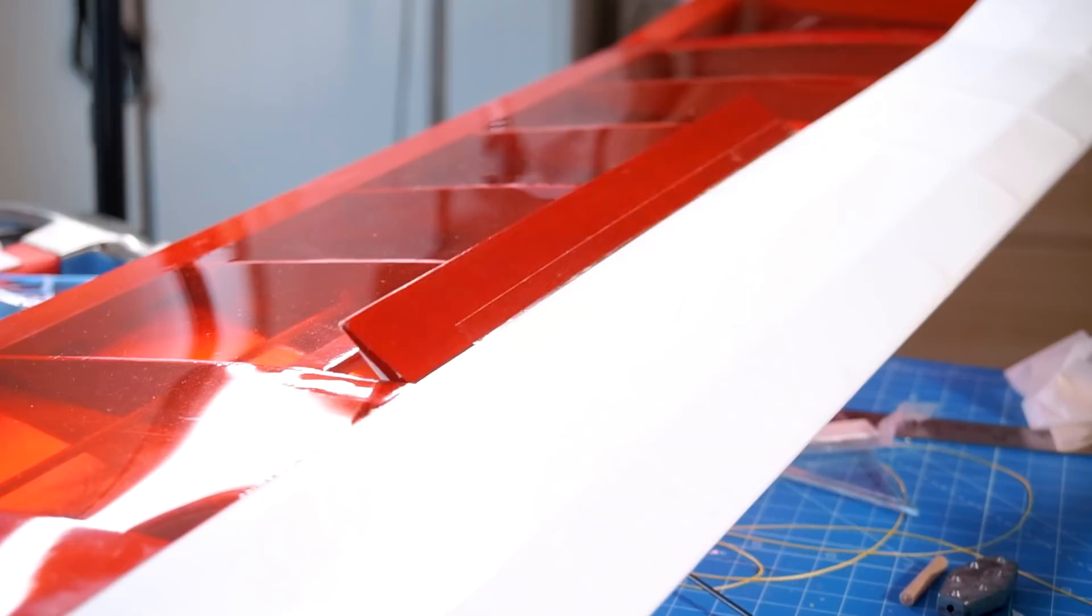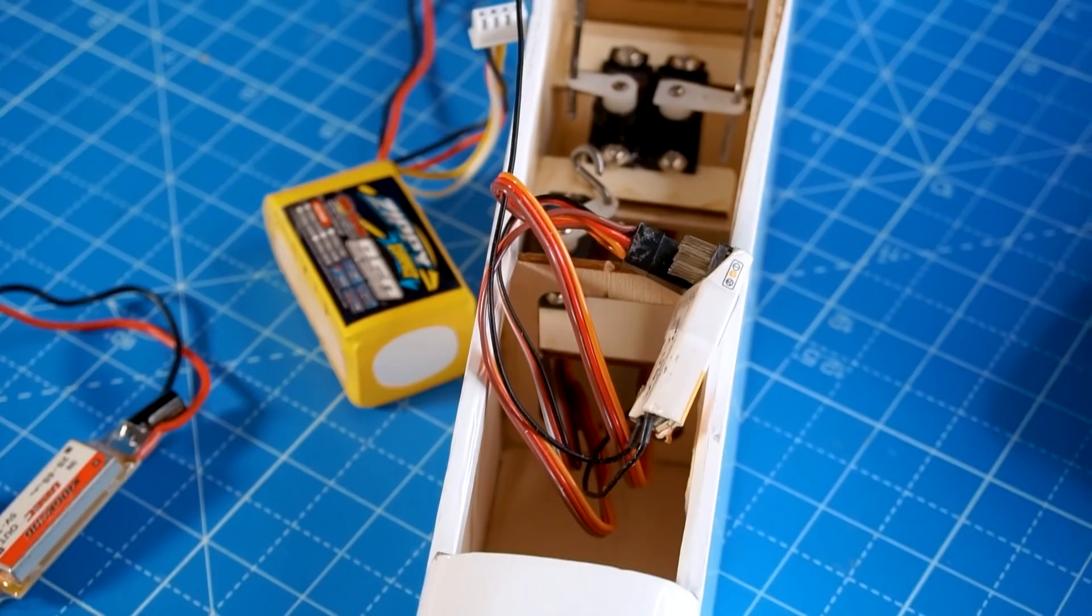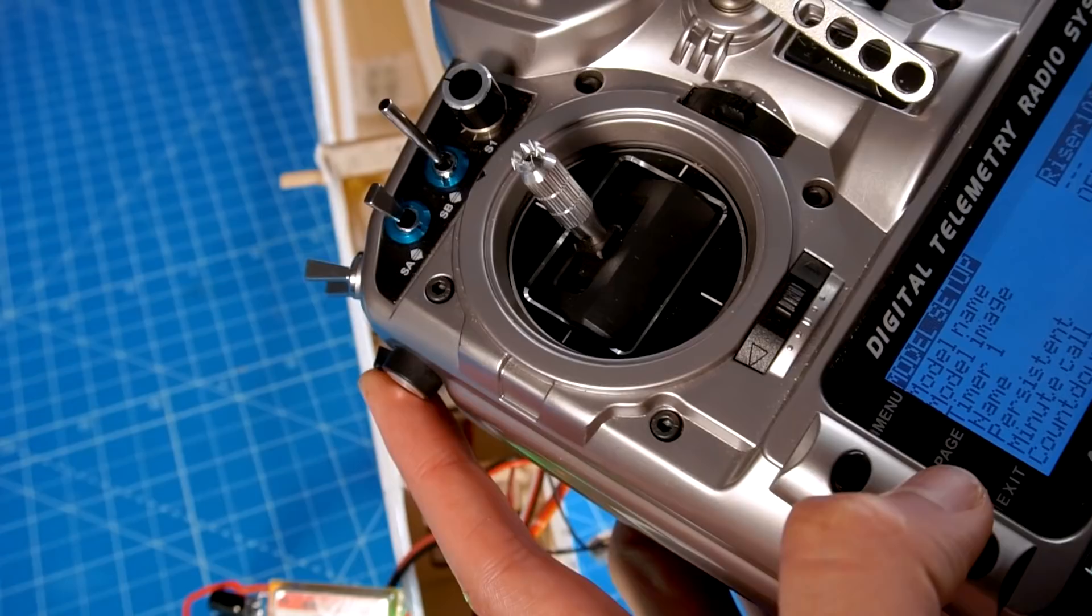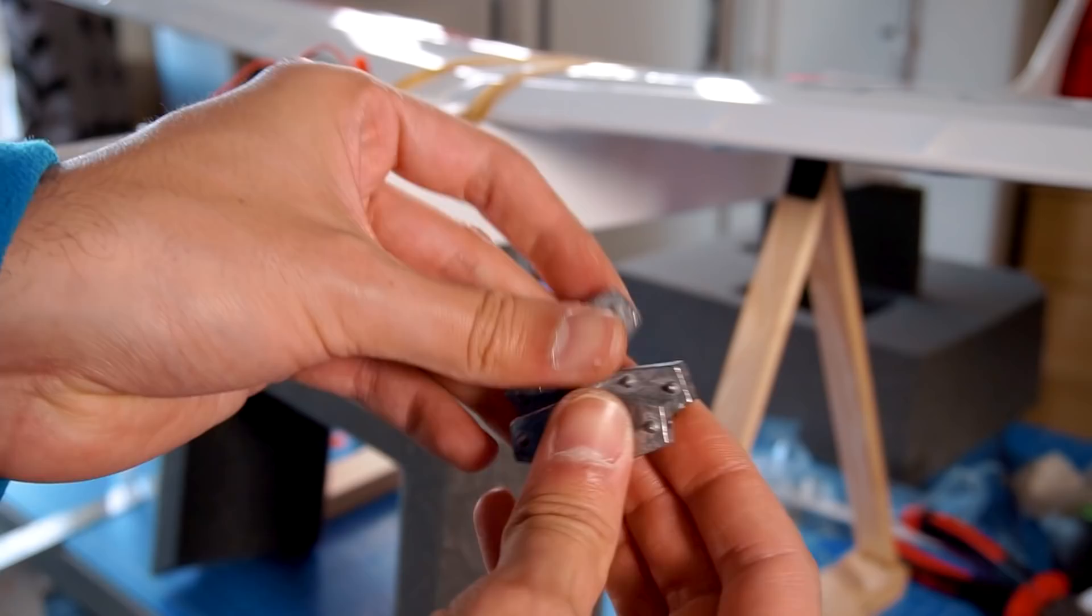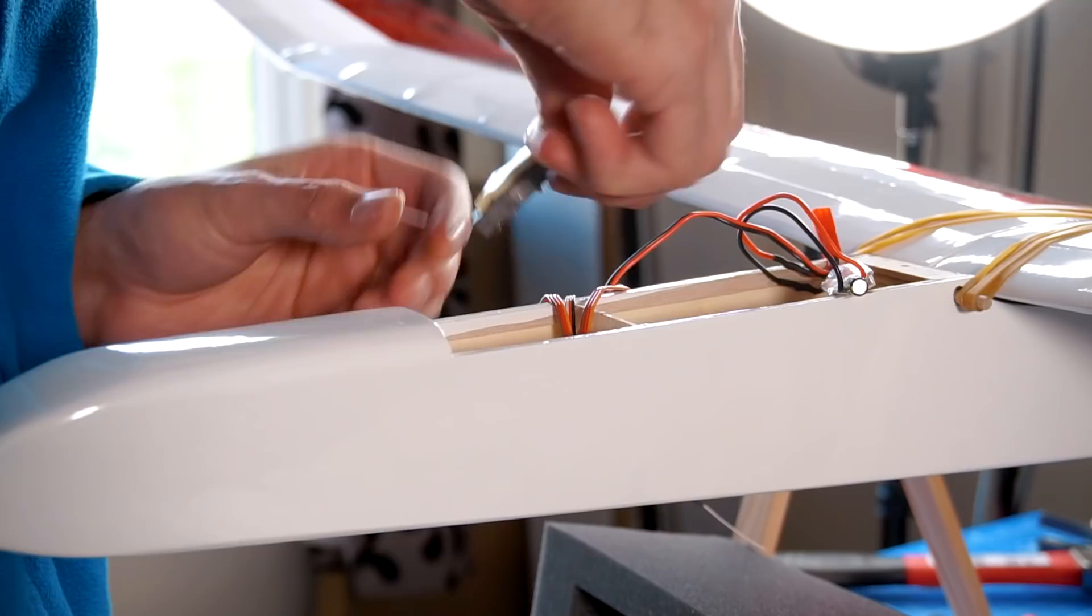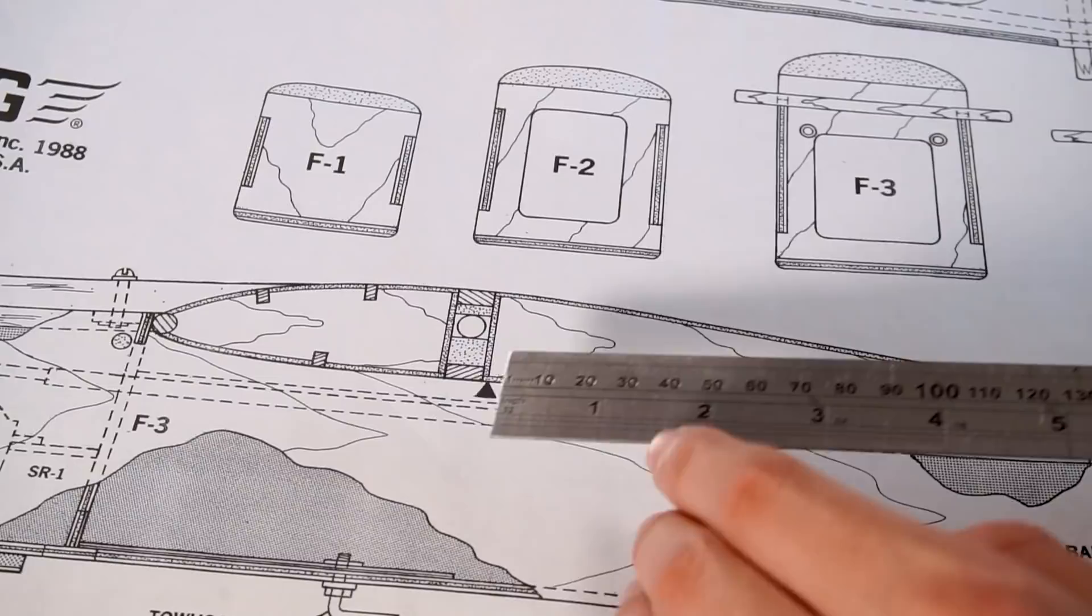Then I put the rest of the electronics and set it up, which is very simple because it's just three channels. There's no need to make any mixes, but I do some adjustments like adjusting the rates, exponentials, and trimming. The next important step is to balance the airplane or adjust its center of gravity. For that I'm using weights made out of lead. The CG location is shown in the plans—make sure to have it well balanced for best performance.